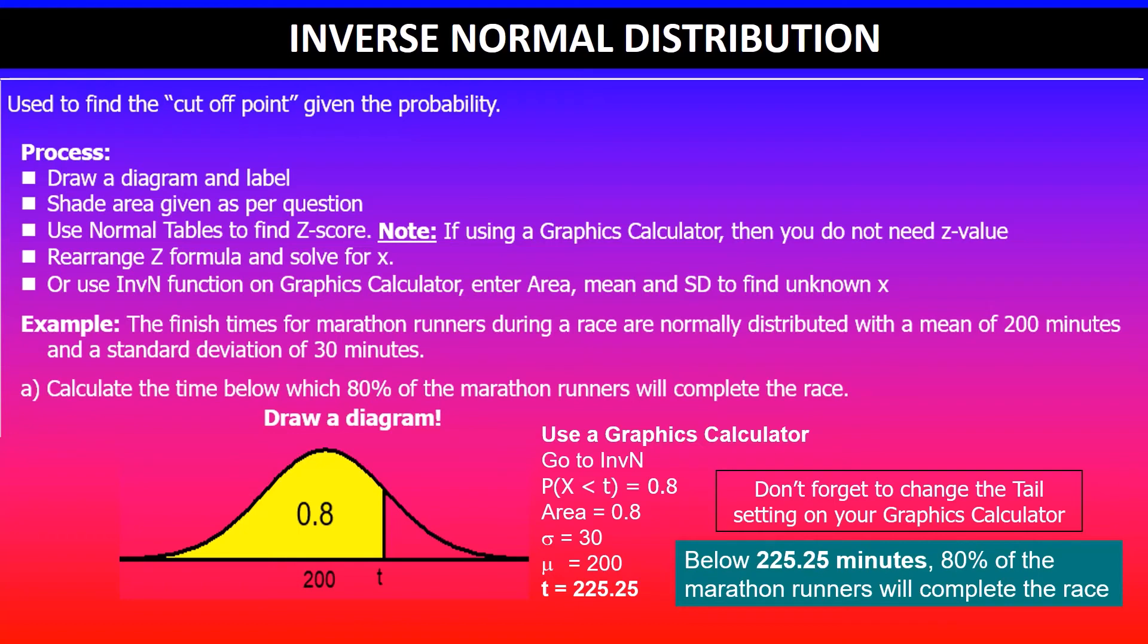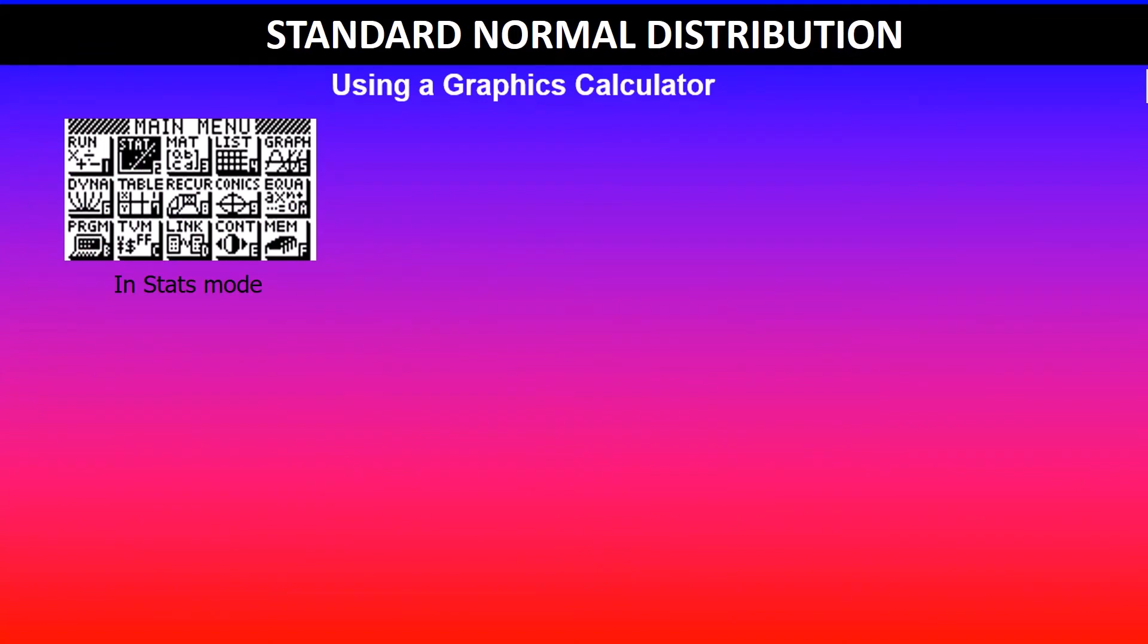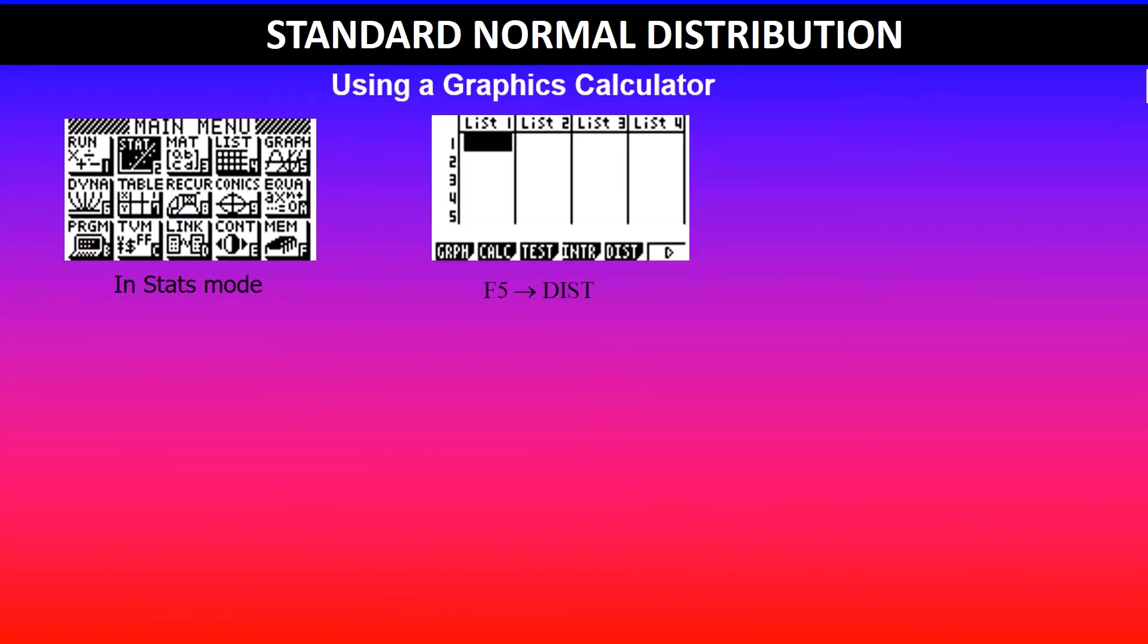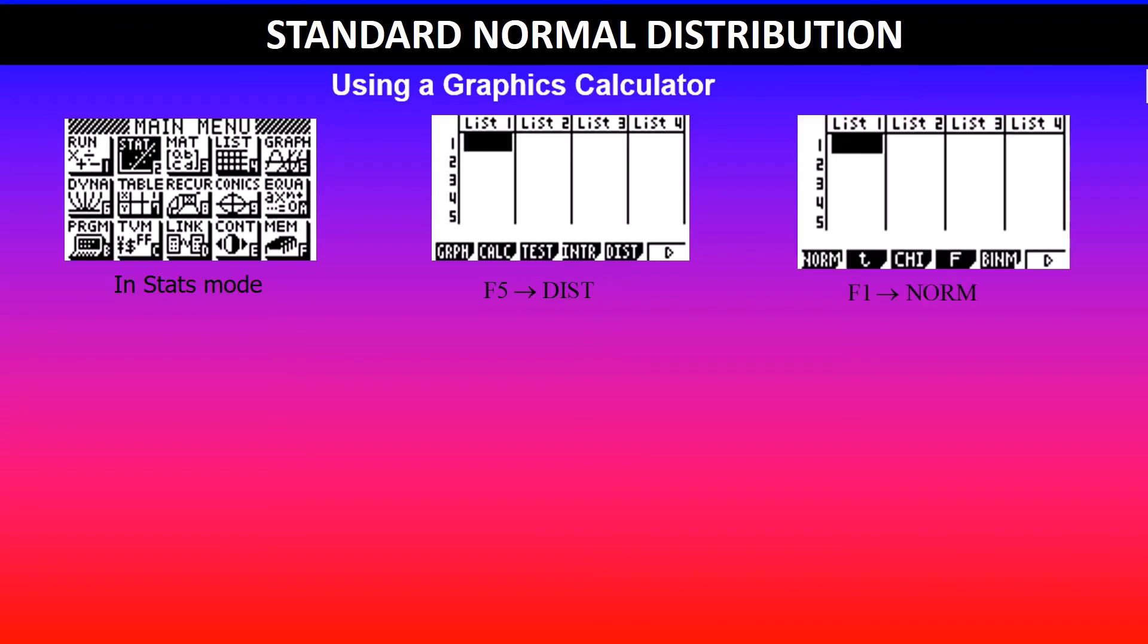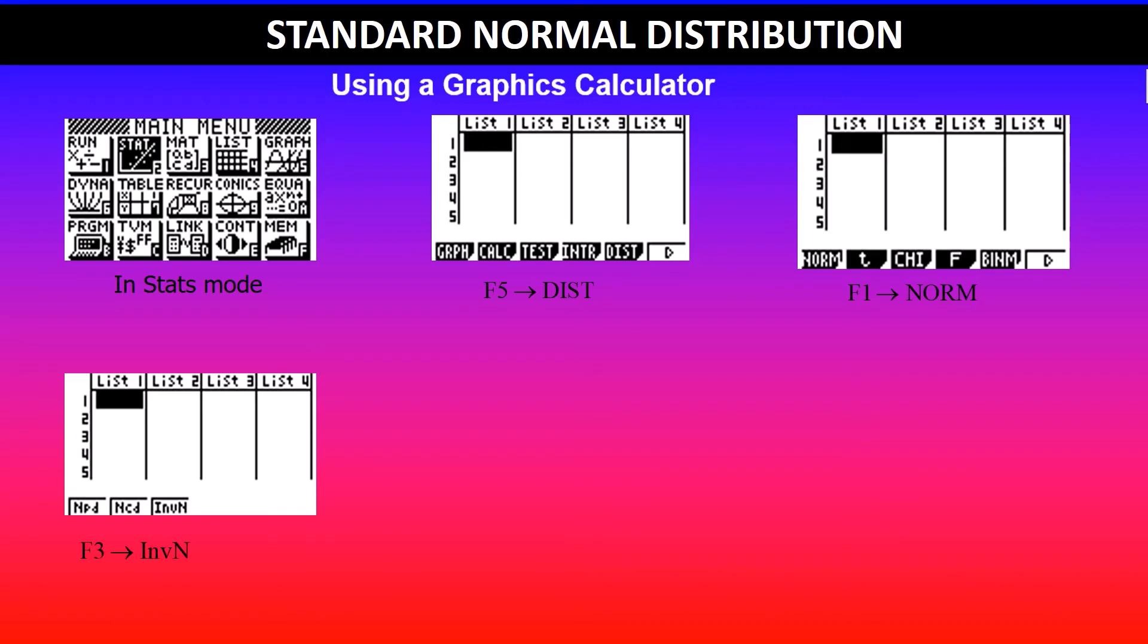The only thing you will need to remember is the tail setting. Here's a quick summary from the Stats mode. You will go to distributions by clicking F5 and then you will click F1 to get to the normal distribution which will give you three options.